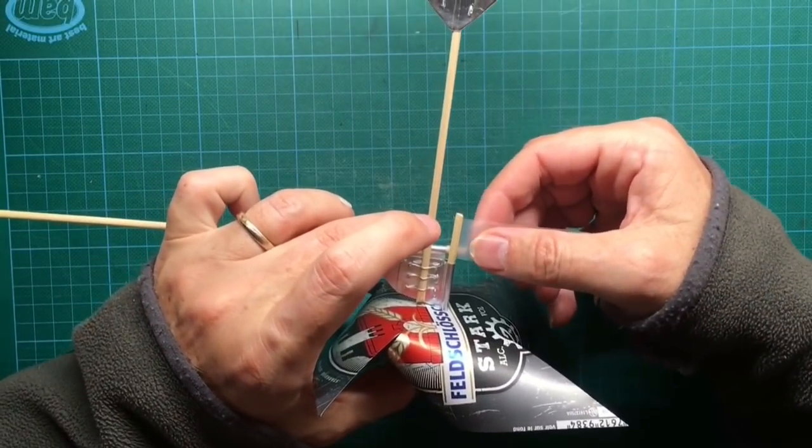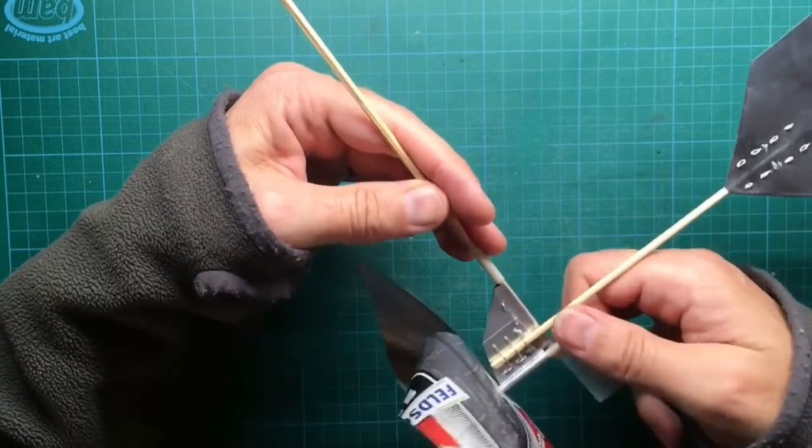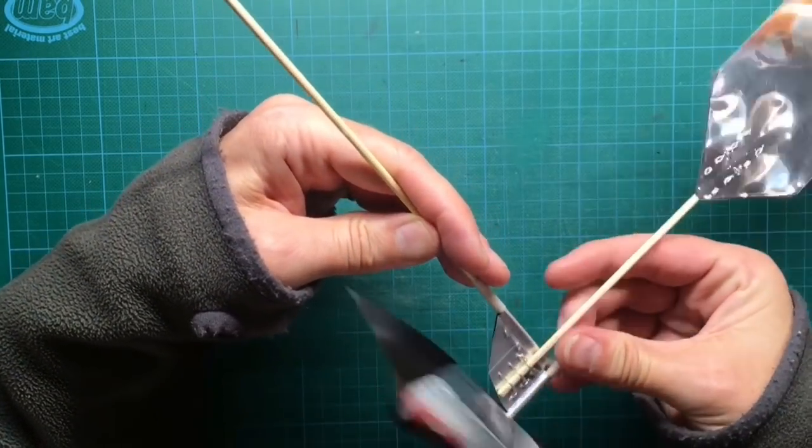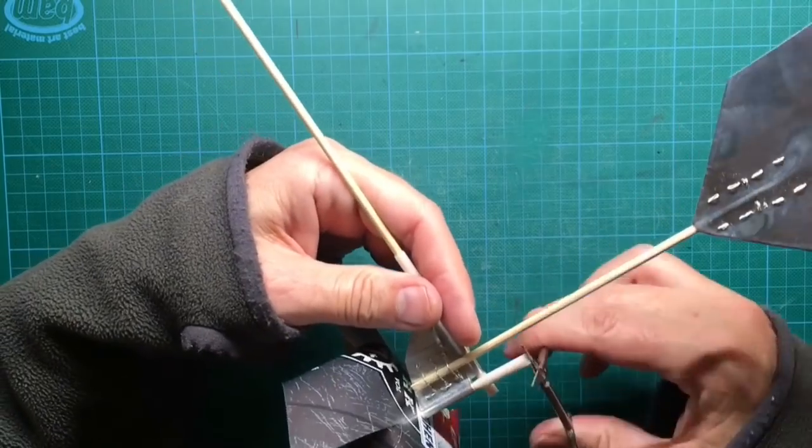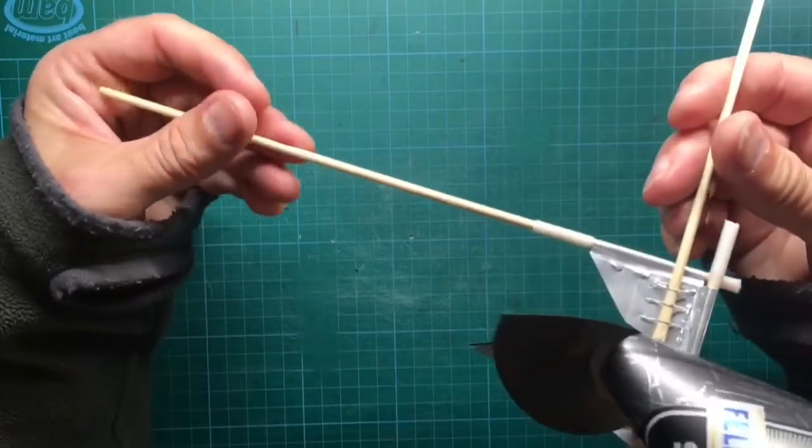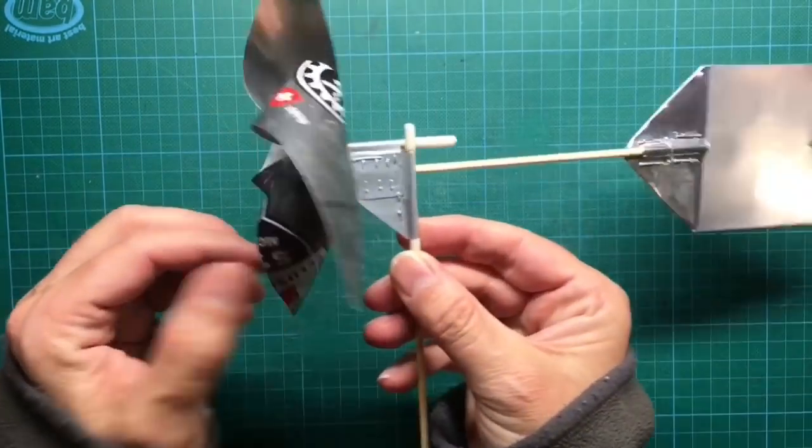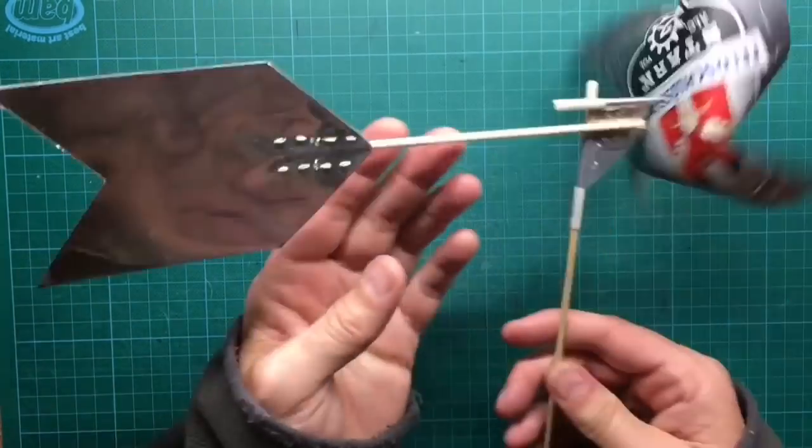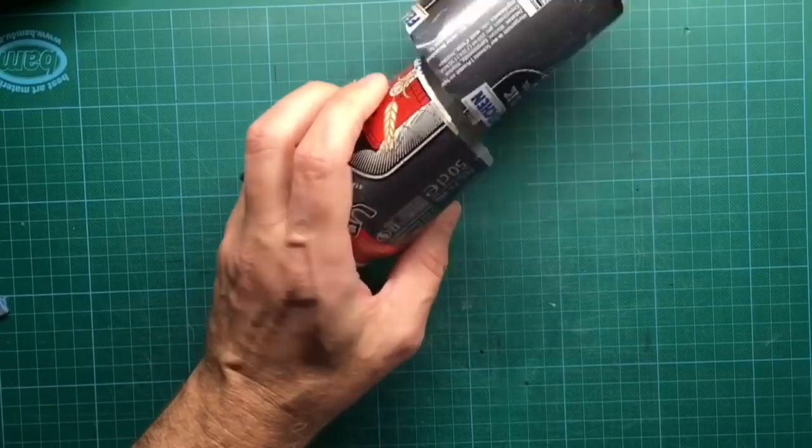Actually you have finished your pinwheel from soda cans. You can put this pinwheel directly into the earth of a flower pot. Or you can go on with me to make this beautiful concrete stand so you can place your pinwheel on a table.